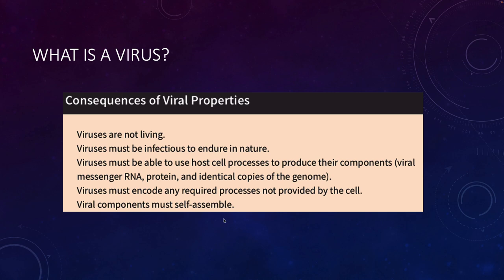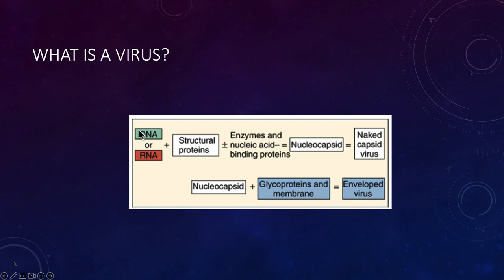Chlamydia can replicate its own DNA, make its own mRNA, and make its own proteins — it doesn't use host machinery to do that, it only uses host energy. If there is a process the virus needs that isn't provided by the host cell, the virus has to bring that along with it. Viral components must be able to self-assemble inside the host.